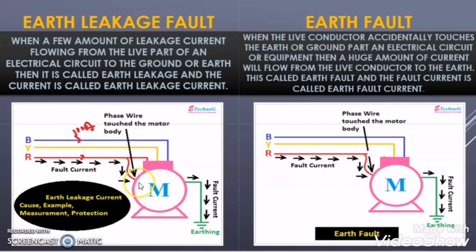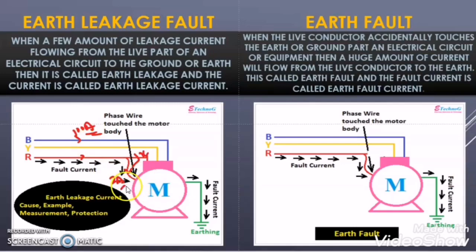But due to something happening, 2 Ampere of current is spilling to the body of the motor. So 2 Ampere of current is leaking to the body of the motor and 98 Ampere of current is flowing through the R phase. But the other two phases — blue and yellow — are having the same current of 100 Ampere each. So this condition is called the earth leakage fault condition. Here you will observe that a very minor amount of the supplied current is flowing through the earth and the maximum current is flowing through the motor.